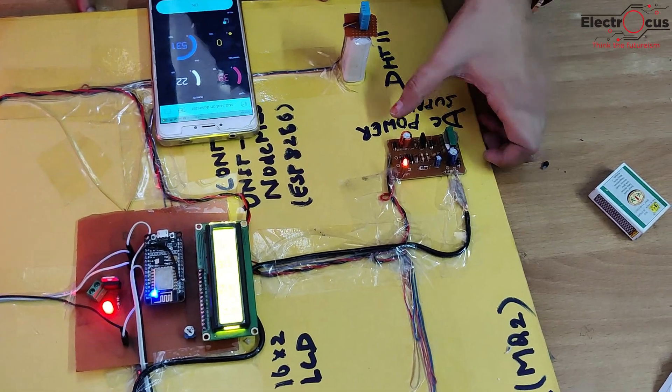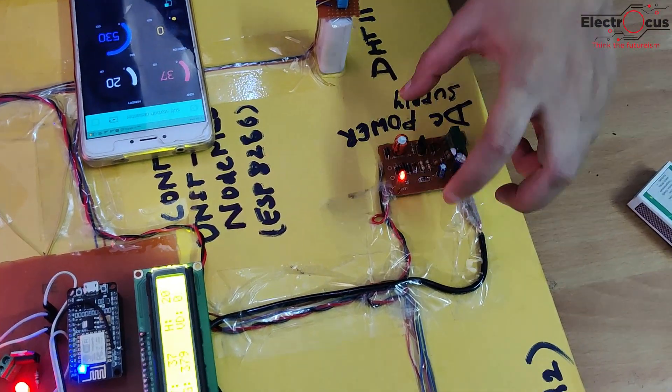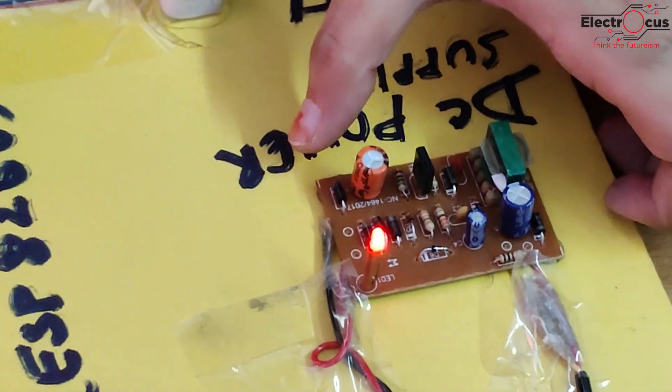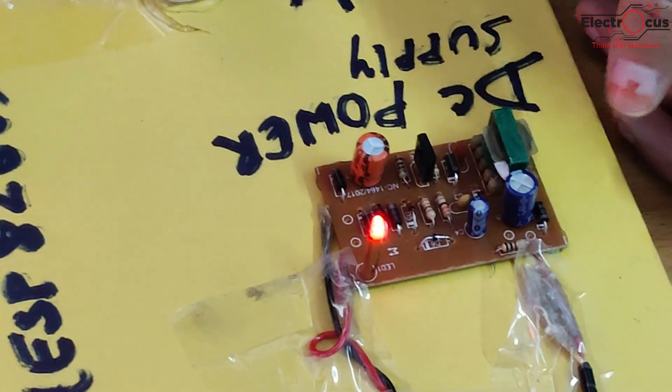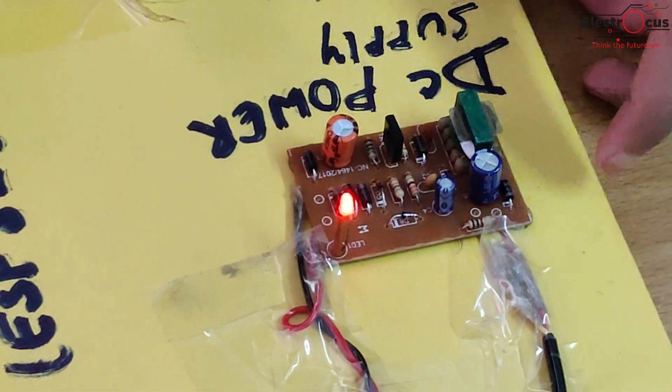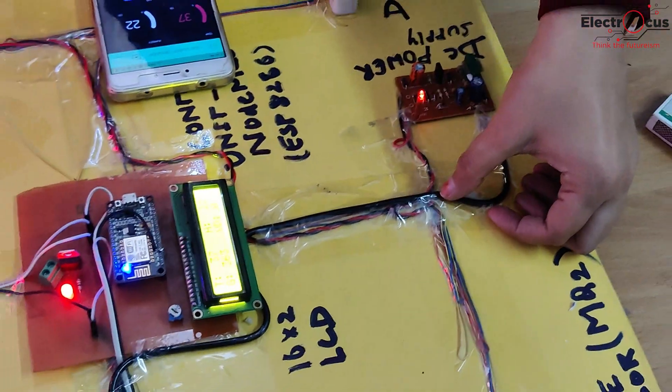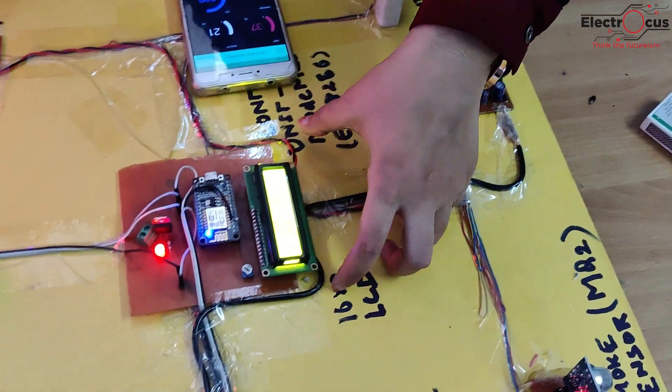After converting this 220 volt AC supply, this circuit is used here which directly converts 220 volt AC supply to 5 volt AC supply, and the output end of this supply circuit is connected to the Node MCU.